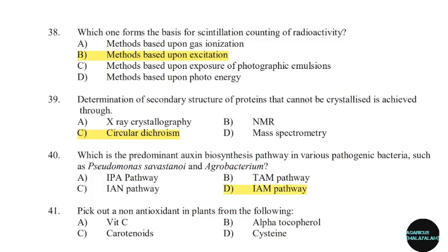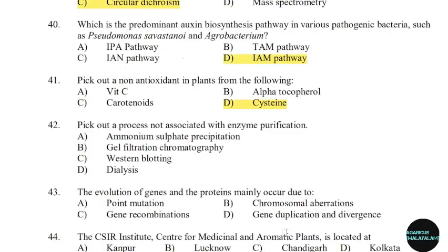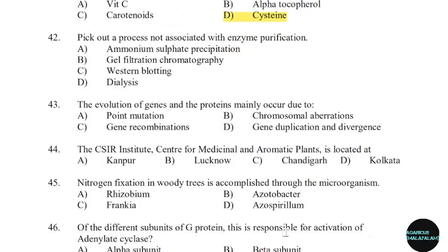41st question: Pick out a non-antioxidant in plants from the following. Correct answer: Option D — Cysteine.